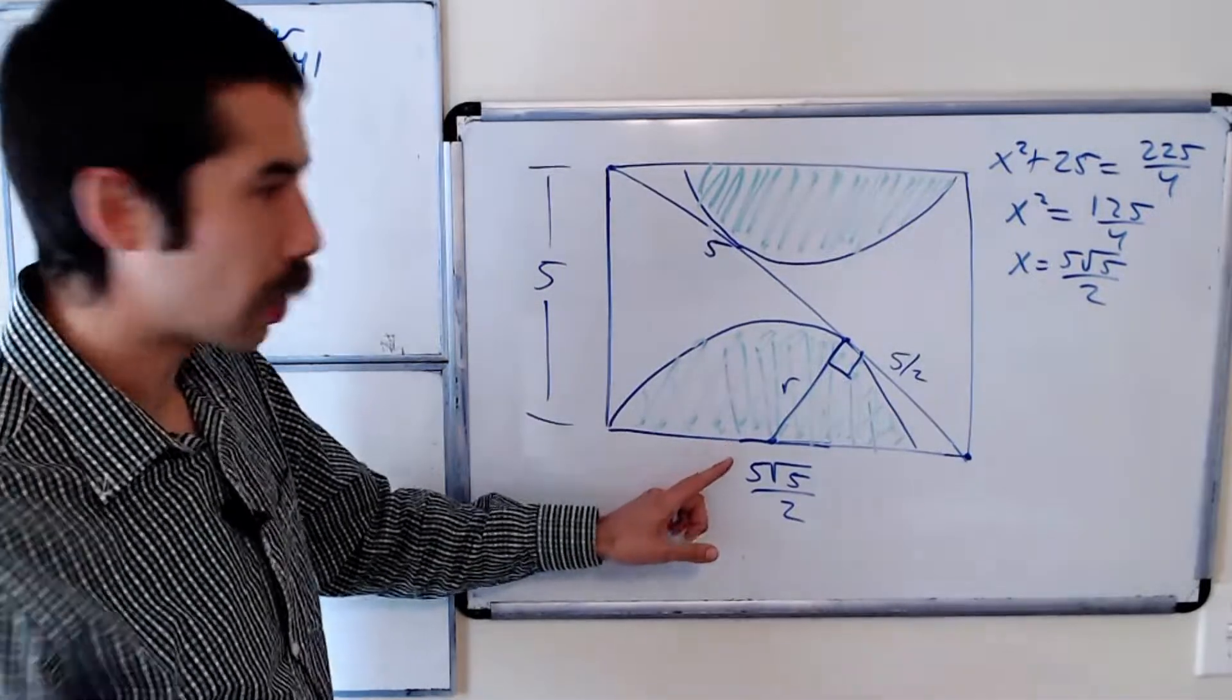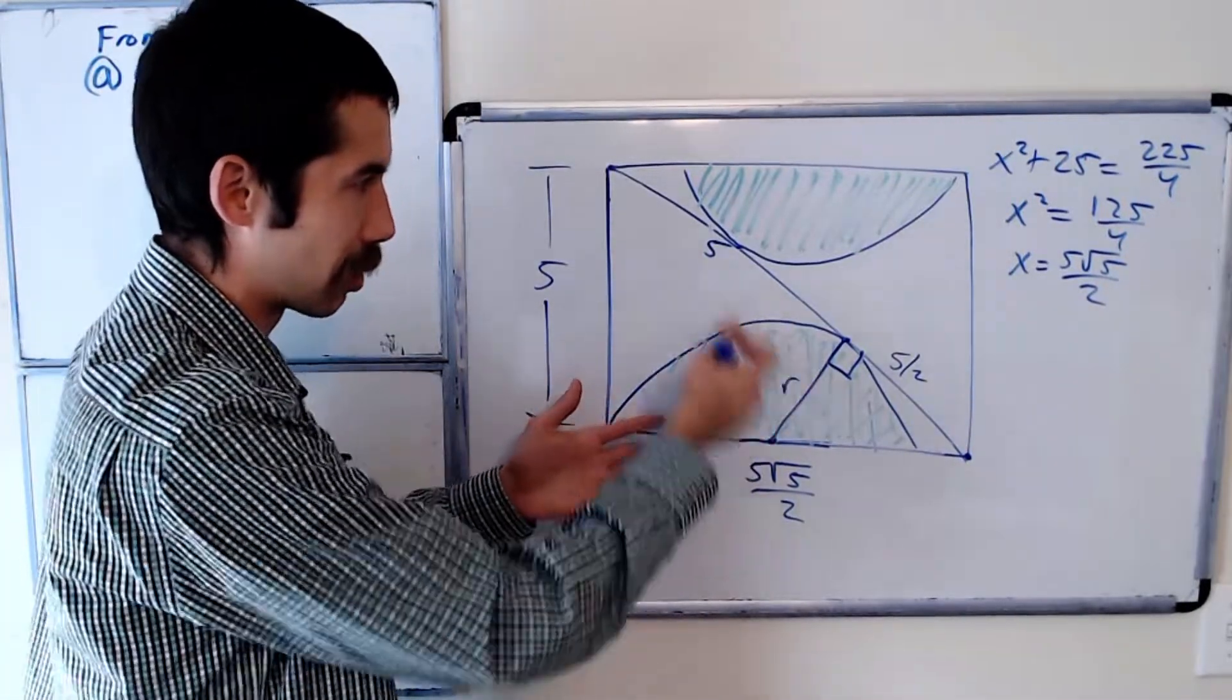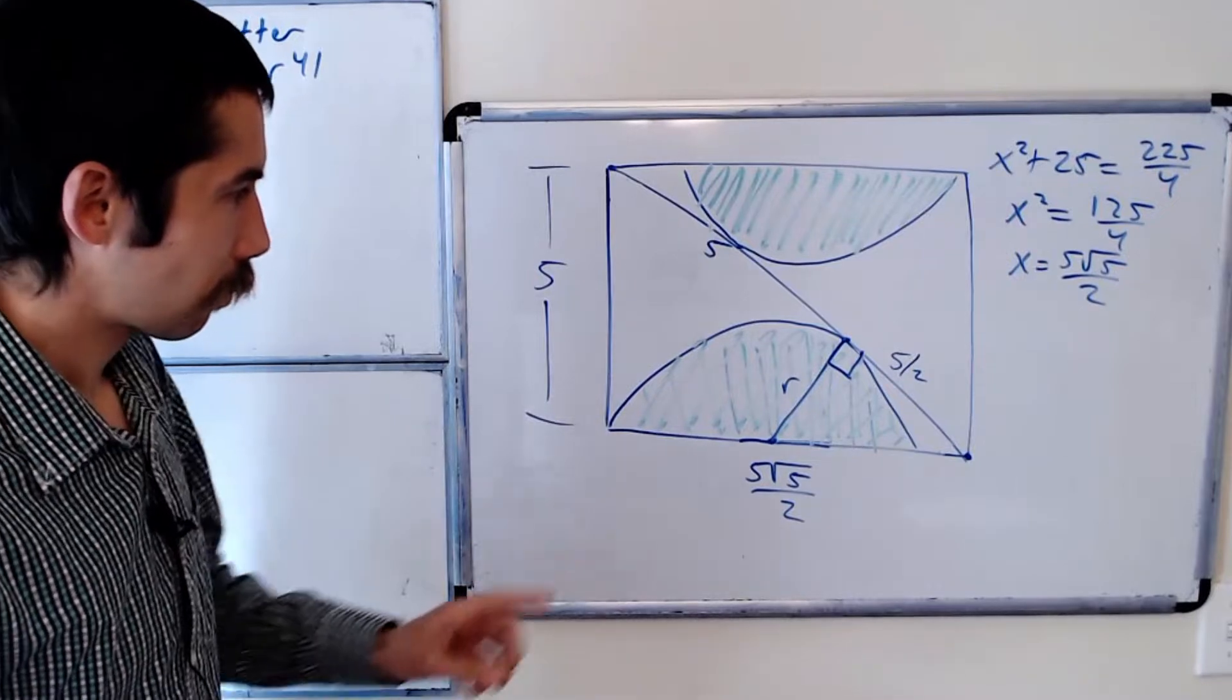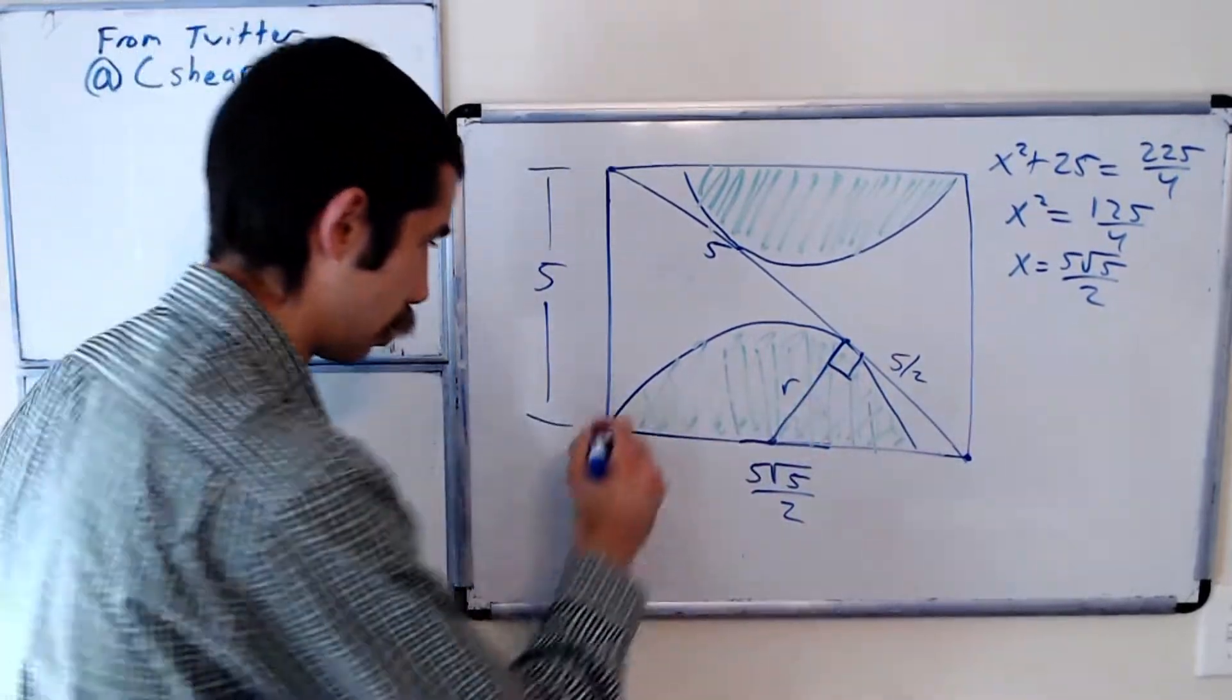Again, we want to find r, so we could find the area of a semicircle and just multiply it by 2.